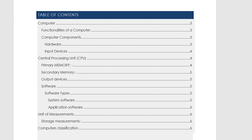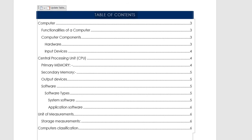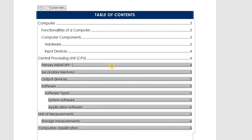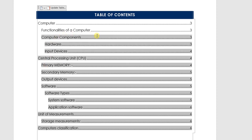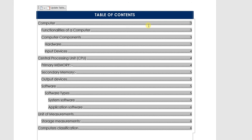A handy shortcut: you can hold Ctrl and left-click any heading in the table of contents, and Word will automatically take you to that point in the document. So there we have it — we've successfully generated a table of contents. Make sure you first assign proper formatted headings, then insert a blank page, then go to References to insert the table of contents. I hope this video helps, and if it did please like and stay subscribed to the channel for more Microsoft Word, Excel, PowerPoint, and MS Project tutorials.